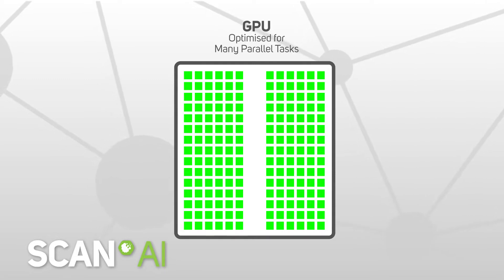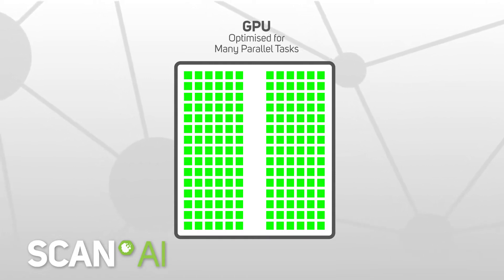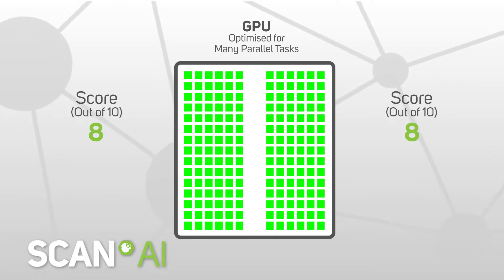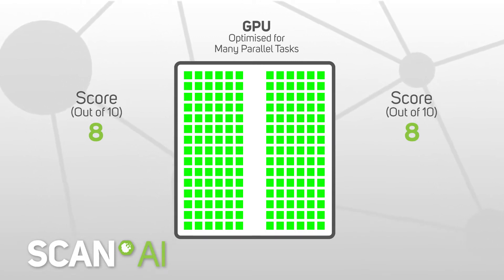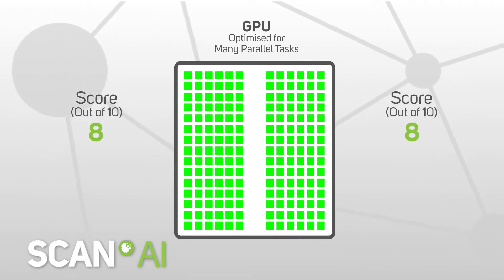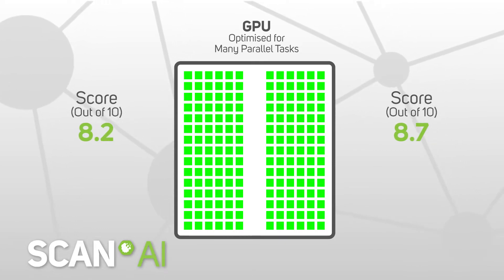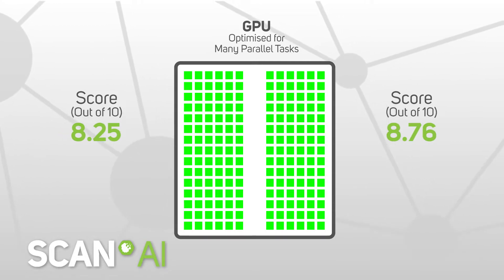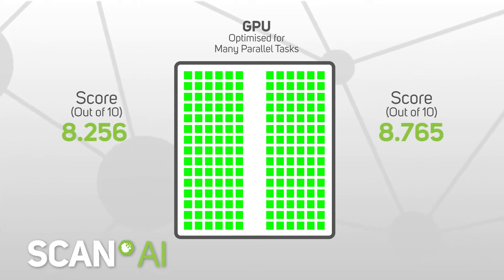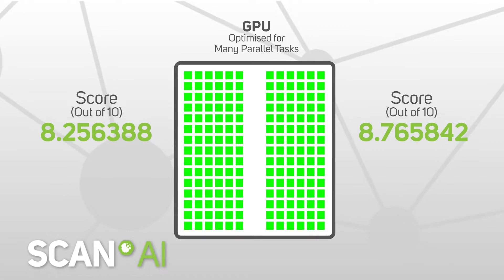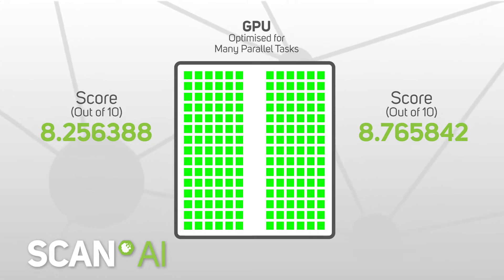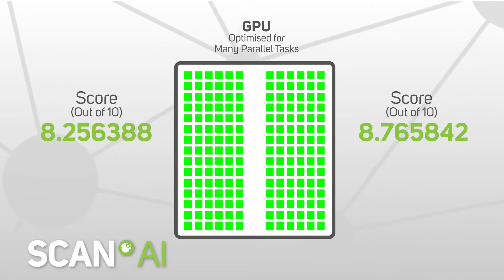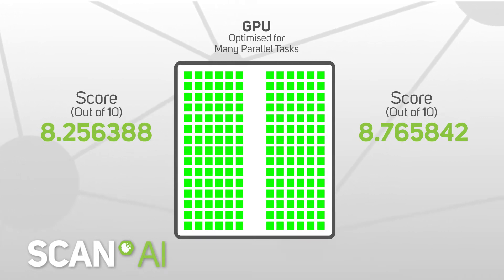Precision refers to the number of decimal places in any given result. If you think about a score out of 10, two people could get 8 out of 10 — there's nothing between them. But add a decimal point, such as 8.2 and 8.7 out of 10, you have more precise results. Add another decimal and you have even more precision. Having more decimal places to represent each number gives scientists the flexibility to represent a larger range of values, with room for a fluctuating number of digits on either side of the decimal point during the course of a computation.